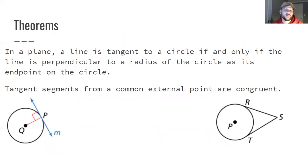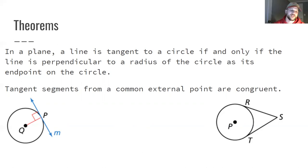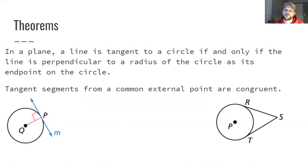Regarding points of tangency: in a plane, a line is tangent to a circle if and only if the line is perpendicular — meaning 90 degrees — to the radius at its endpoint. So tangent segments drawn outside the circle are perpendicular to the radius at the point of tangency. In the bottom-left diagram, radius QP has exactly one perpendicular tangent line M. Additionally, tangent segments from an external point are congruent to each other, as shown in the right-hand diagram where RS and ST are both tangent segments from common point S and are congruent.